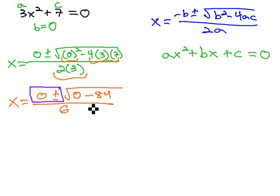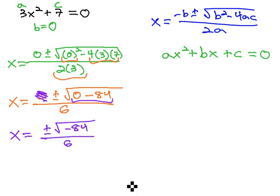Noticing the front of this is 0, plus or minus, that's not going to really have any value at all. So, we're going to kind of ignore the 0. And 0 minus 84 is going to be negative 84, so we get x is equal to plus or minus the square root of negative 84, all over 6.